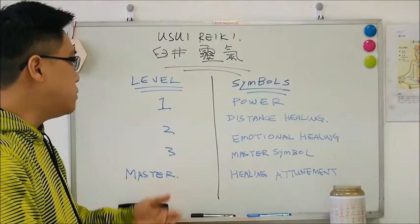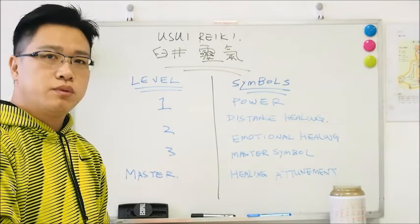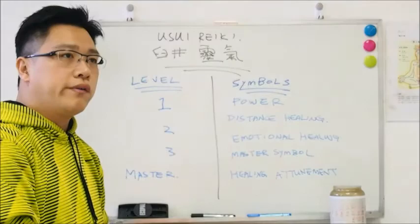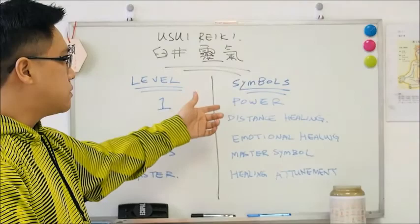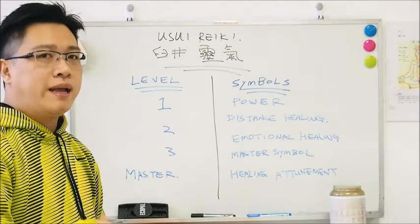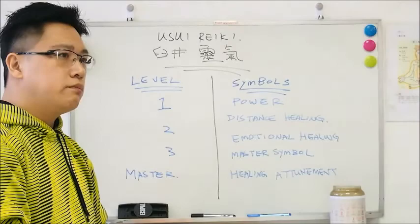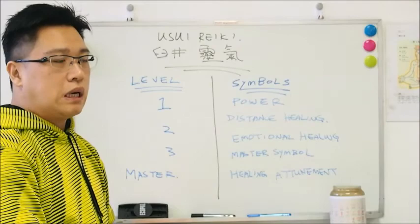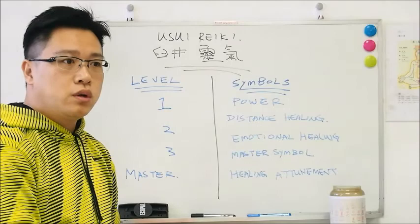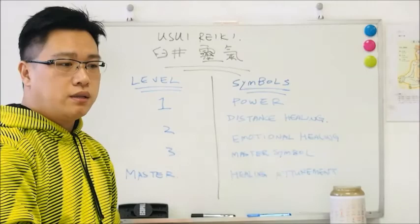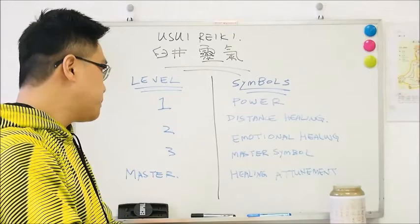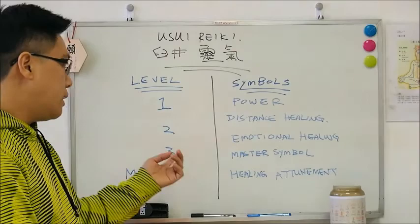In level 2, you start learning three symbols of Reiki. We learn the power symbol, which enhances the power of the Reiki flow. The distance healing symbol, meaning that you can do healing without the client in front of you — it helps in emergency situations when you haven't yet arrived at the patient. And the emotional healing symbol, which helps on the emotional side.